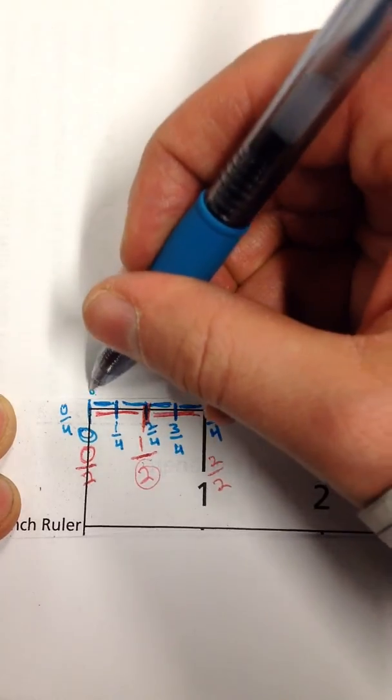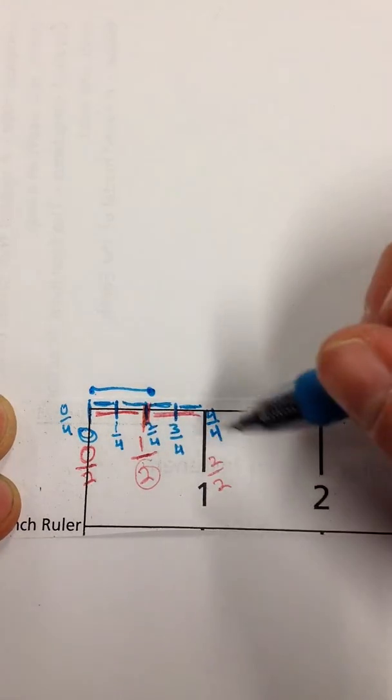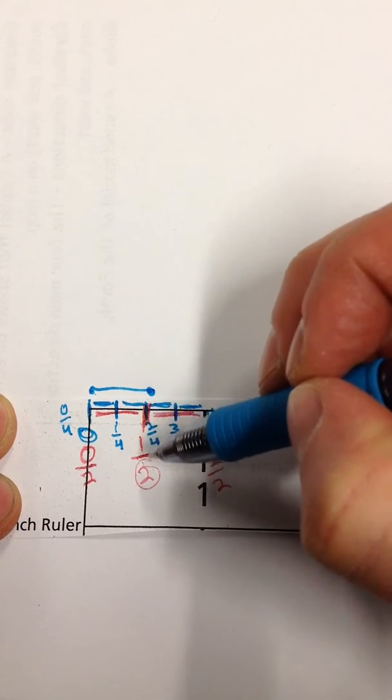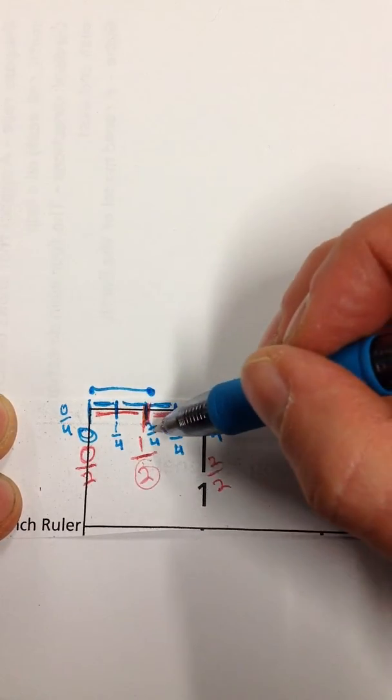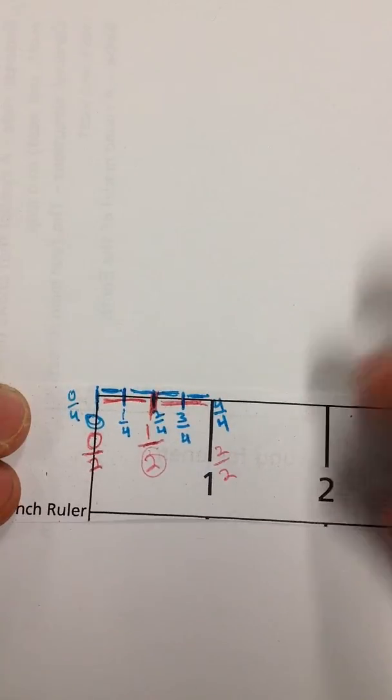So if you see a line segment like this, and it's this long, you could say it's a couple different things. You could say that it's almost a half an inch. Or you could say it's almost two fourths of an inch. Either way would be correct. We don't have these normally. Normally we have these.